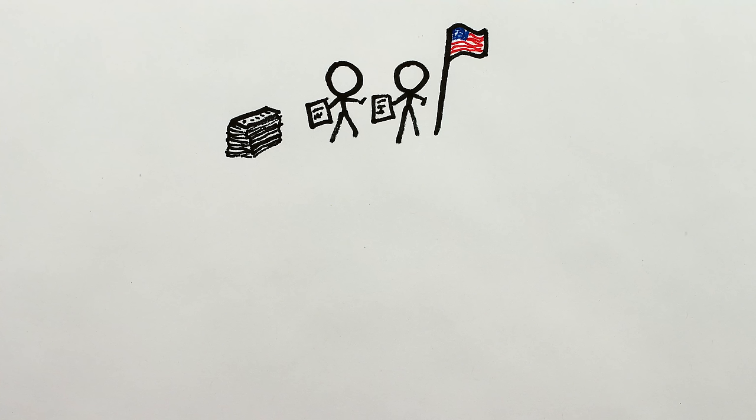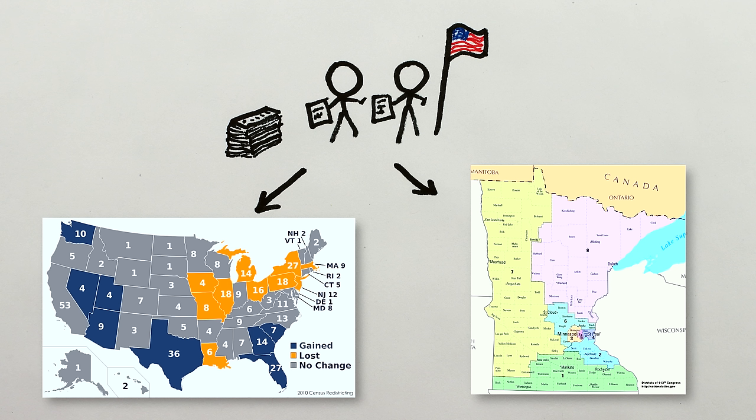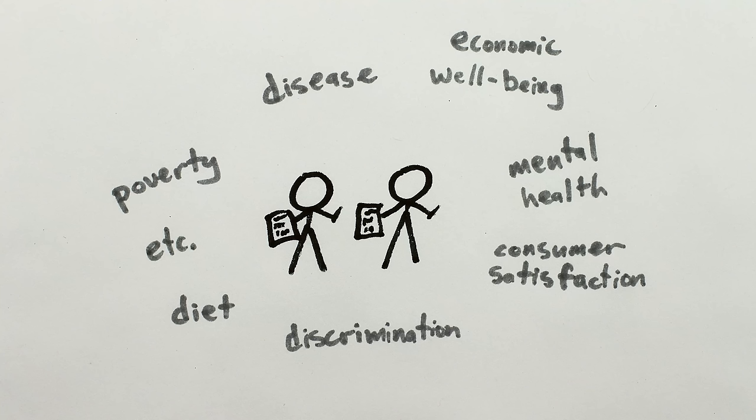The results of the U.S. Census are of particular political relevance since they are used to determine the number of seats that different states get in the U.S. House of Representatives, as well as the boundaries of legislative districts from Congress down to city councils. But big surveys are also useful for understanding lots of other issues too.